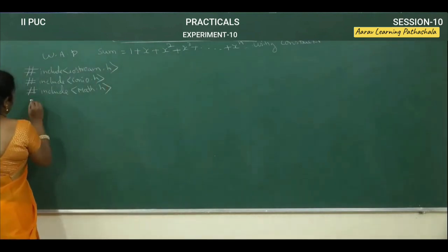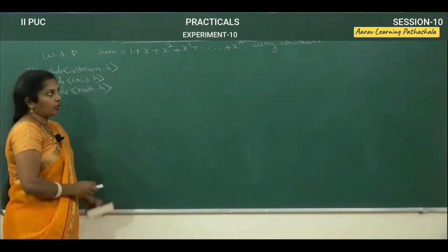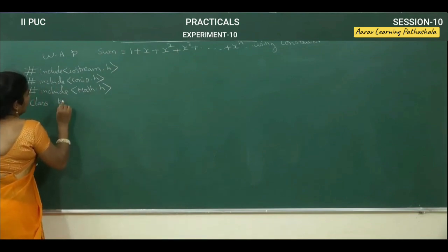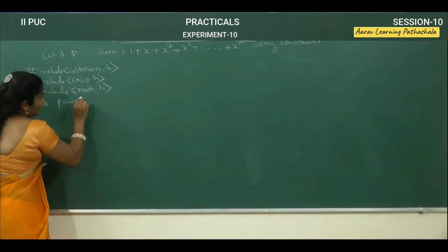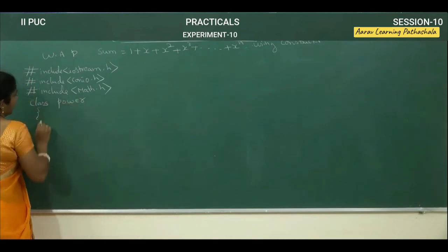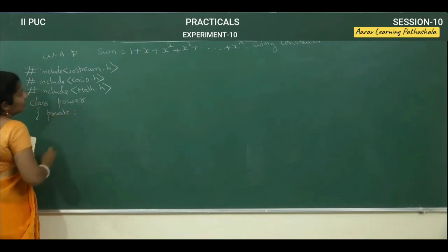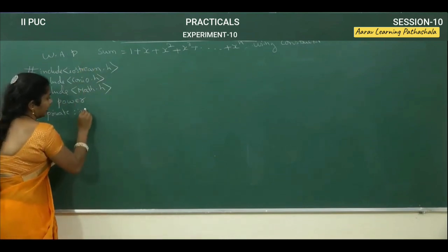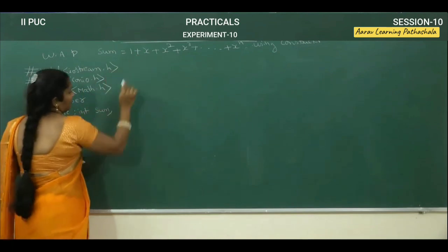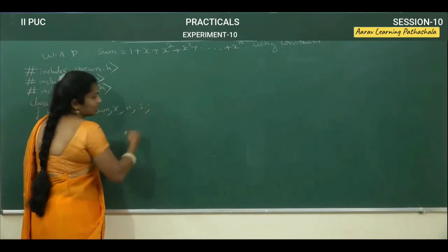Now we want to start with the program class. What is the aim of our program? To find sum of the series by using power. That's why the class name is power. Here, class power. In the private section, we are declaring the variables — the variables we require: in integer format, we are declaring to store the result: sum, then x, for last power n, and for incrementation purpose i.